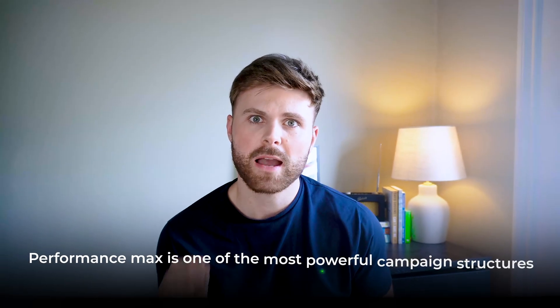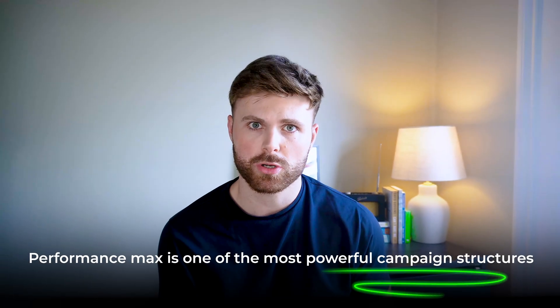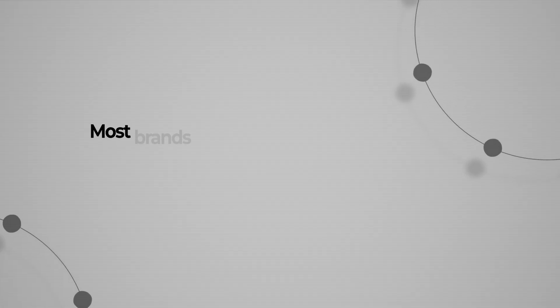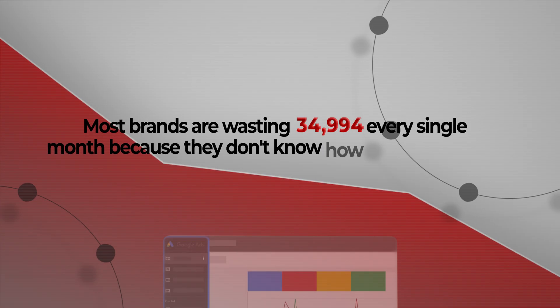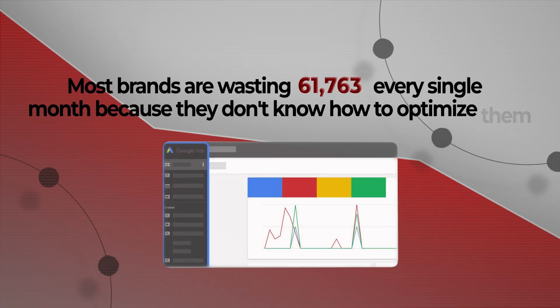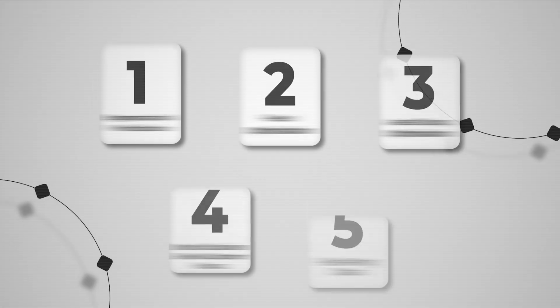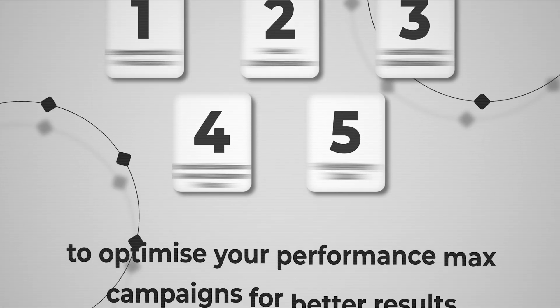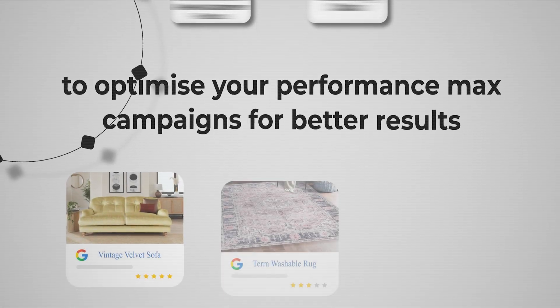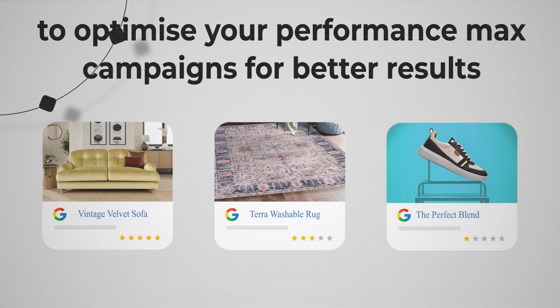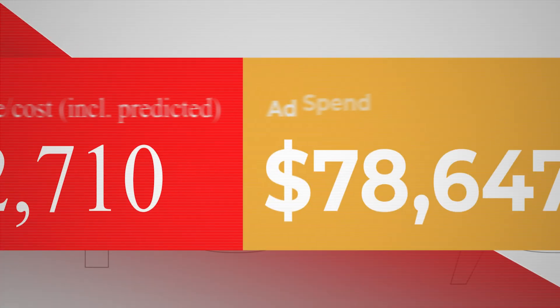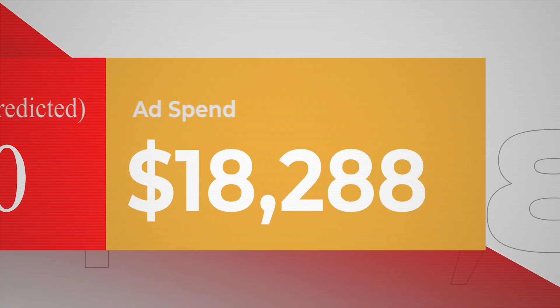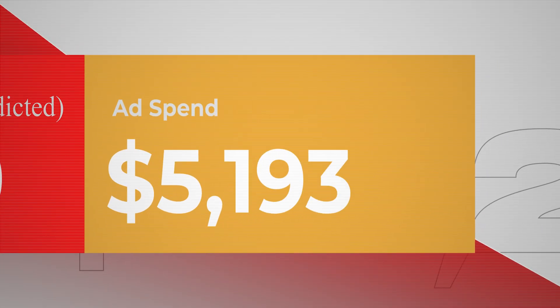Performance Max is one of the most powerful campaign structures, but most brands are wasting thousands every single month because they don't know how to optimise it. In this video, I'm going to walk you through the top 5 ways to optimise your Performance Max campaigns for better results — more sales, a better ROAS, and far less wasted advertising spend.